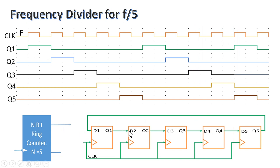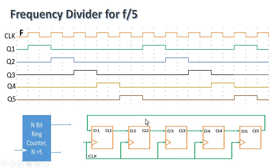Let us look at the output of each flip-flop inside the ring counter. The clock signal has frequency F. We assume the reset value of flip-flop 1 is high and all other flip-flops are 0. As per the ring counter definition, one flip-flop must have a high reset value and all others must be 0. In the first clock cycle, Q1 is high and Q2, Q3, Q4, Q5 are all 0. On the next clock edge, this 1 is passed to Q2, so Q2 goes high and Q1 becomes 0.